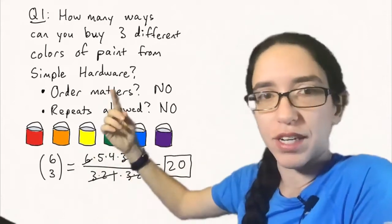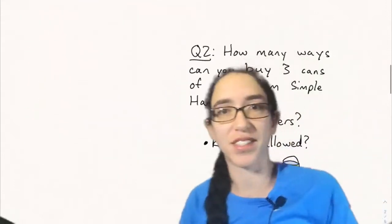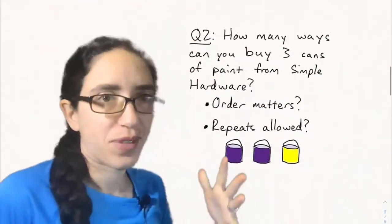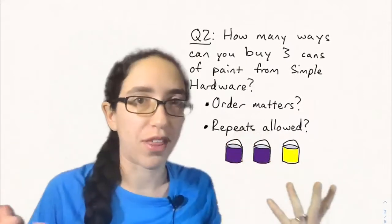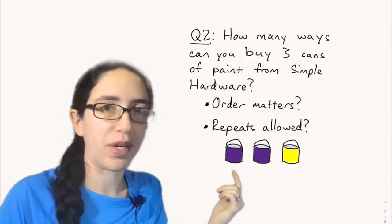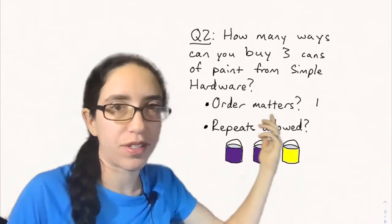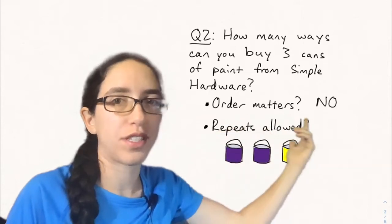And now let's see how it's different if we change the order matters or repeats allowed to some yeses. For instance, now say how many ways can you buy three cans of paint where you're allowed to choose the same color twice? So maybe I want two purple doors and one yellow. Well now this is a bit of a different question because now order still doesn't matter.